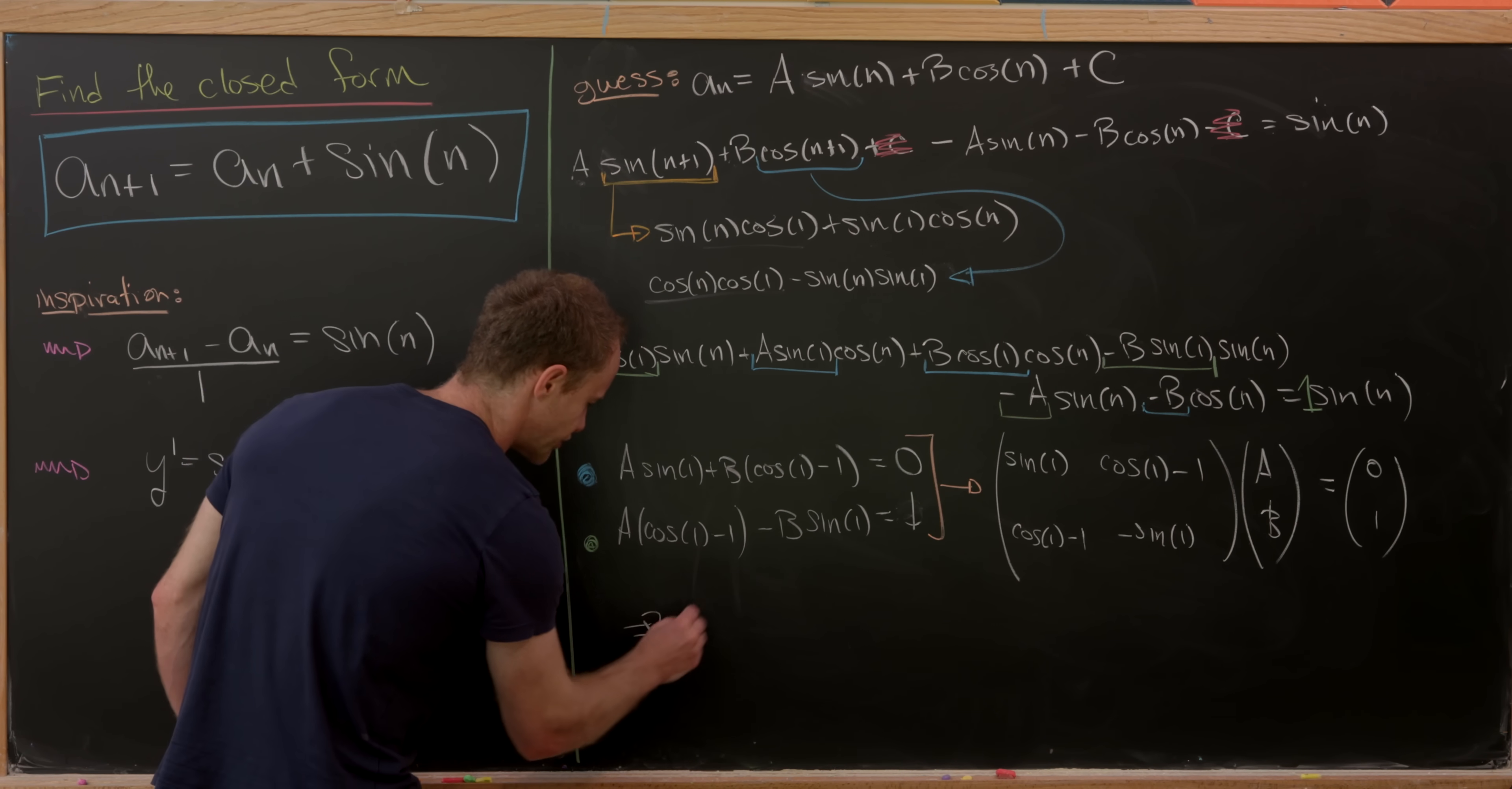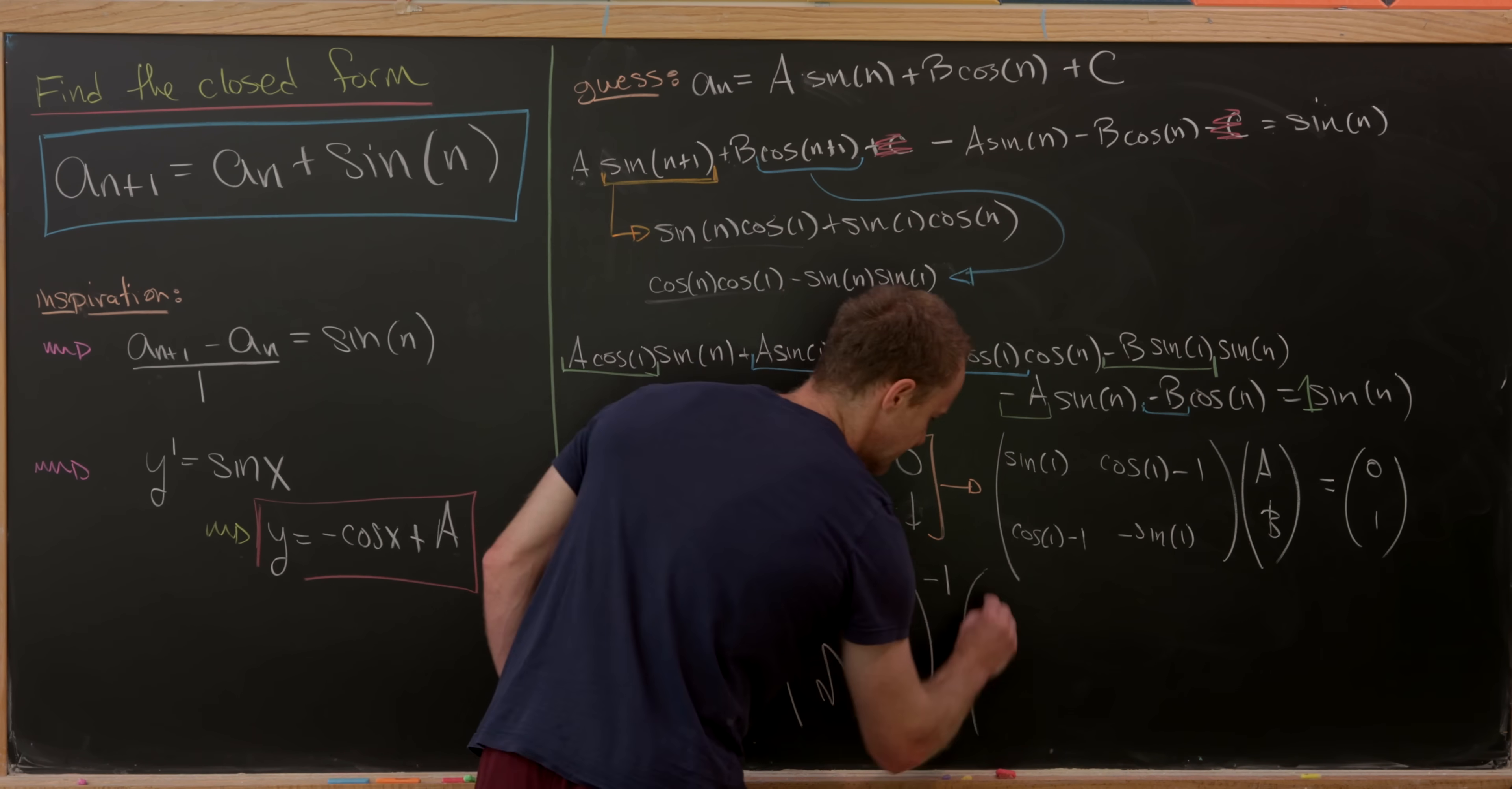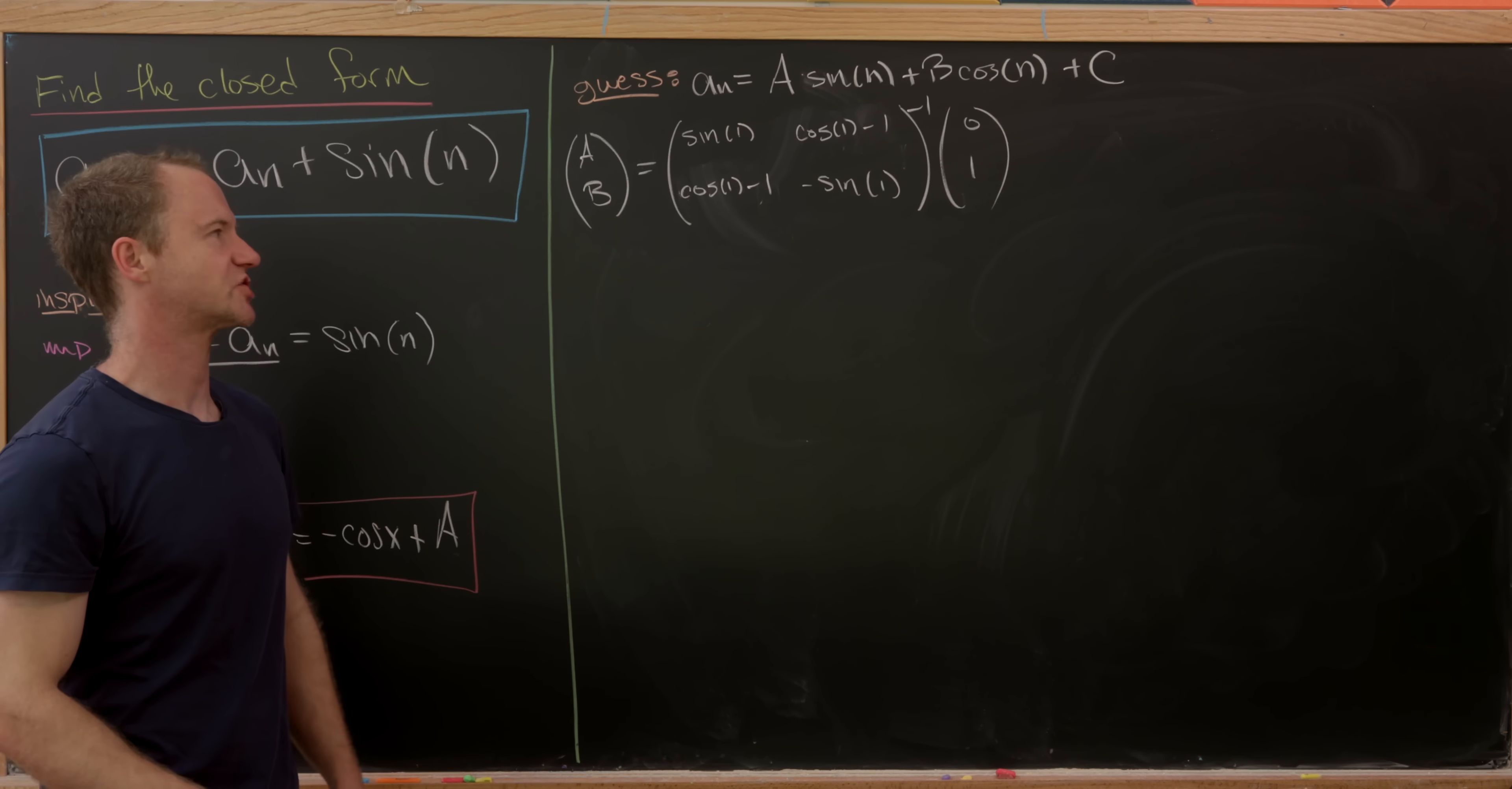But notice that allows us to solve for this vector of coefficients fairly easily. So it'll be this big matrix right here, inverse times the vector 0, 1. So let's maybe bring that to the top and do the last couple of steps. So this is where we left ourselves off. And now we're ready to finish it off.